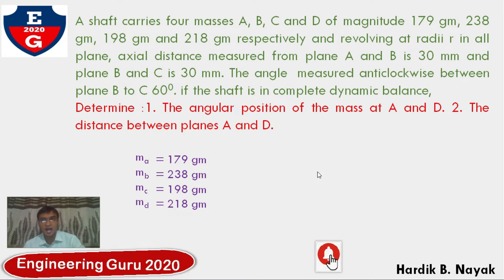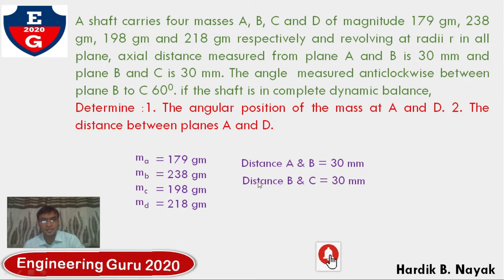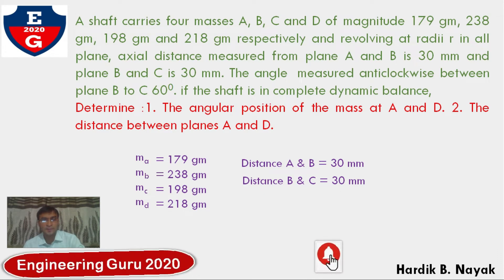All revolve at radius R in all planes. The radius of rotation R equals 1. Axial distance measured from plane A to B is 30 mm, and plane B to C is 30 mm. The angle measured anti-clockwise between plane B to C is 60 degrees.